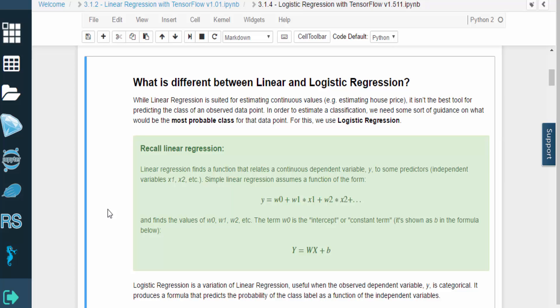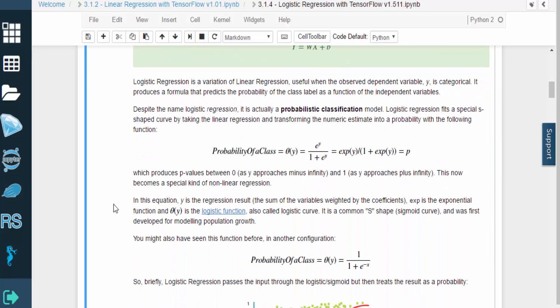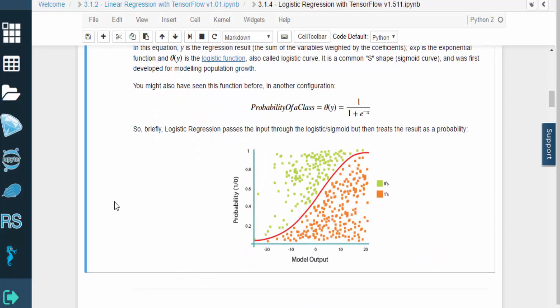You might be familiar with linear regression, which is a useful tool for estimating continuous values like housing prices, for example. But if we need to perform classification and determine which class a data point is likely to belong to, then we need to use a different type of model. This is where logistic regression comes in.